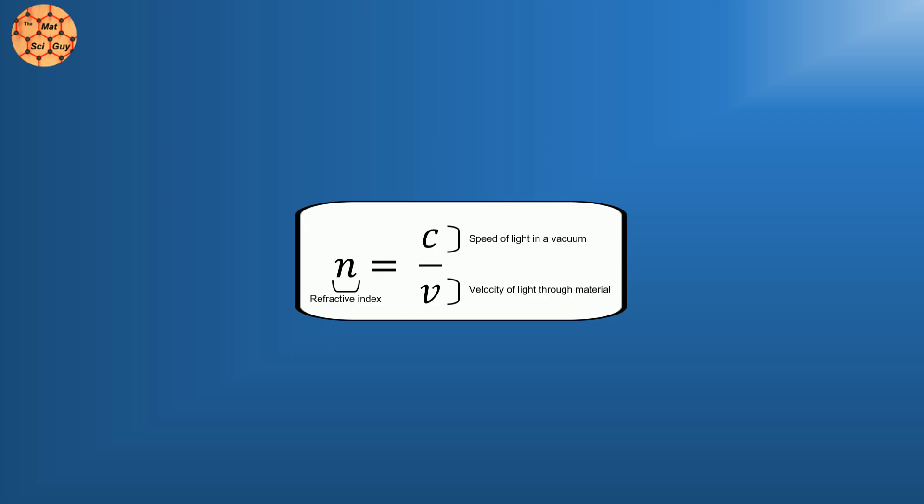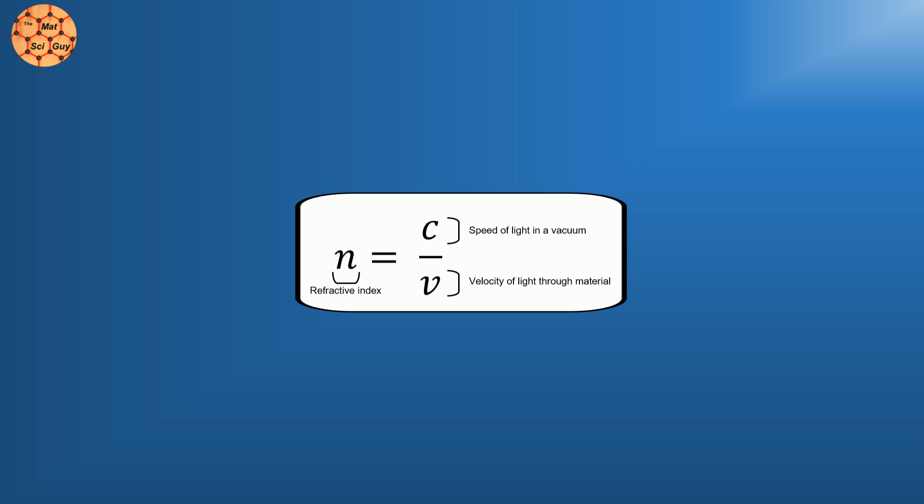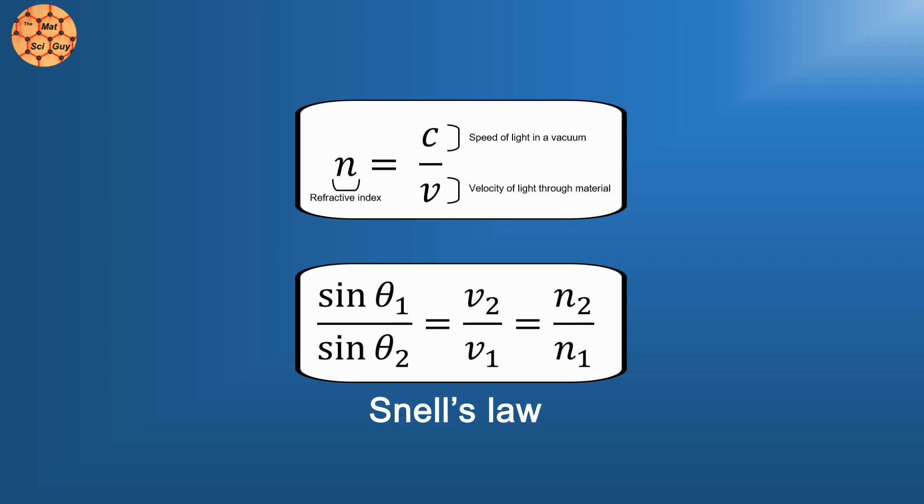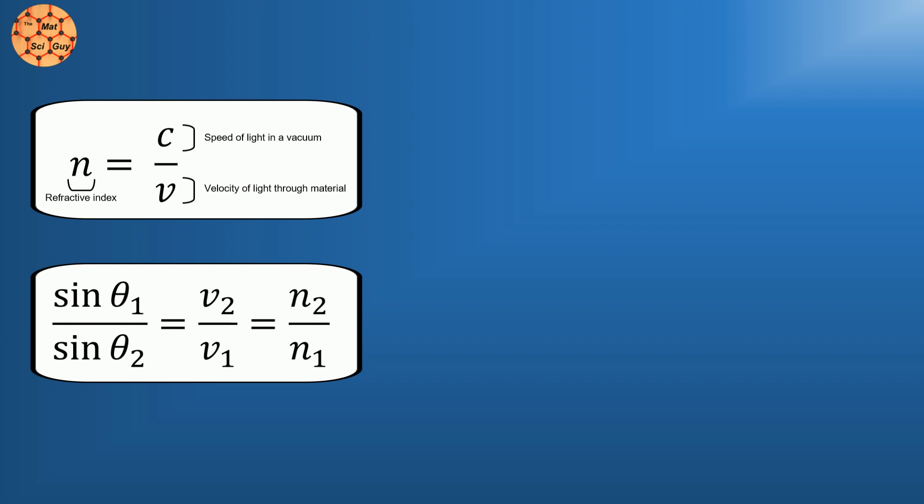Mathematically, this is defined as the ratio of the speed of light in a vacuum versus its phase velocity through the material. This leads to an equation called Snell's Law, but you don't actually need the math to get an intuitive understanding of the refractive index.